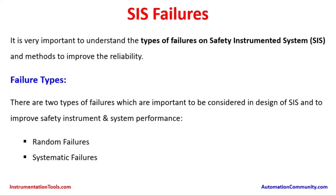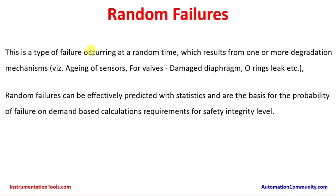There are two types of failures which are important to be considered in the design of SIS and to improve safety instrument and system performance: Random Failures and Systematic Failures. These are the two major categories in which the safety instrumented system can fail.